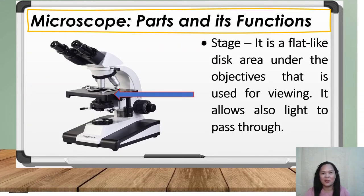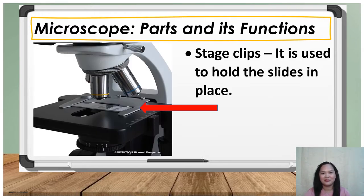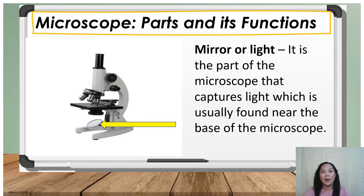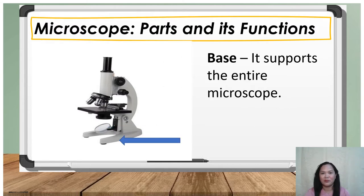The arm: it is the part of the microscope where you can hold and carry the microscope. Revolving nose piece: it is a rotating portion of the microscope under the body tube that holds the objective lenses. Objective lens: it is a mini-tube-like part attached to the nose piece used to magnify the object or specimen — the longer the objective lens, the larger the image. Stage: it is a flat disc-like area under the objectives used for viewing; it also allows light to pass through. Stage clips: used to hold the slides in place. Diaphragm: it controls the amount of light directed to the object or specimen. Mirror or light: it captures light and is usually found near the base of the microscope. Base: it supports the entire microscope.